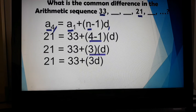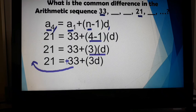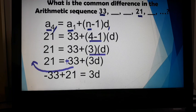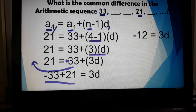Next step, transpose the 33. 33 and 21 are like terms, they are both whole numbers. So the 33, we will move next to 21. From positive, this will become negative later. So negative 33 plus 21 is equal to 3d. Now let's solve this part. Remember, they have different signs, so you have to subtract and copy the sign of the bigger number. Negative 33 plus 21 will give us negative 12 is equal to 3d.